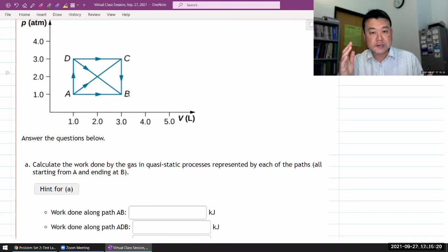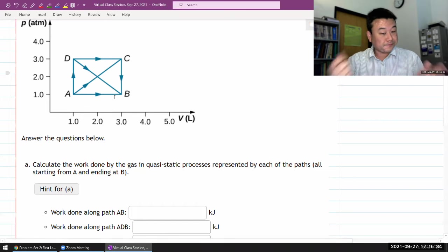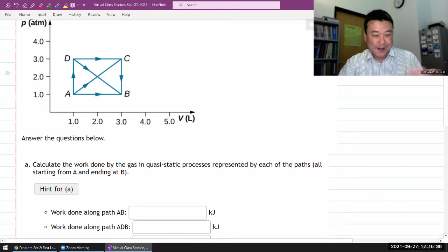So if some process happened so quickly or happened in such a way that you do not have well-defined pressure and volume at every point, then you can't draw a path. Drawing a path implies that you have a quasi-static process.